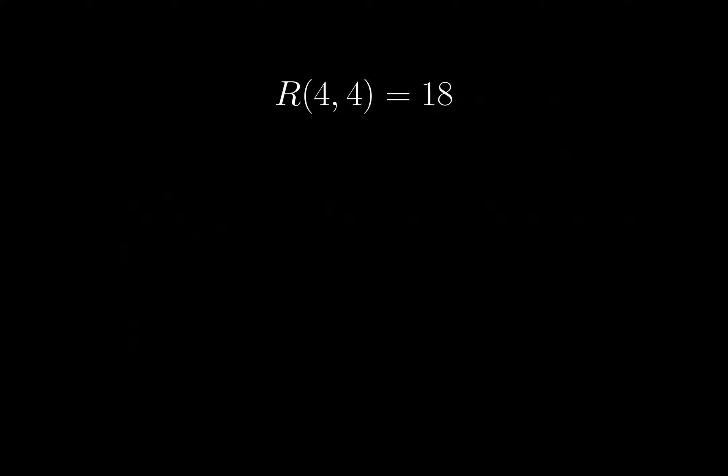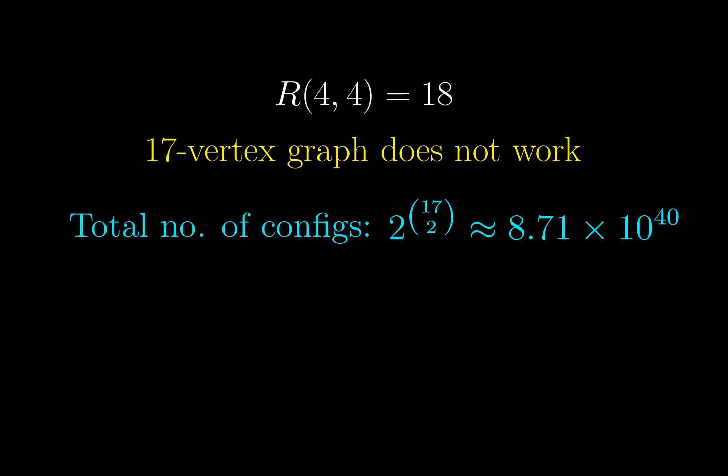But we are not done yet. Asserting that R(4,4) equals 18 also means that a 17 vertex graph does not guarantee 4 vertices all connected in red or green. Again, it is nearly impossible that it is done by brute force, because there are altogether more than 10 to the power 40 configurations to check, and even with a quintillion computations per second, we need more than the age of the universe to check them all. So there must be a slick trick to construct a counterexample, which we will discuss in another separate video.